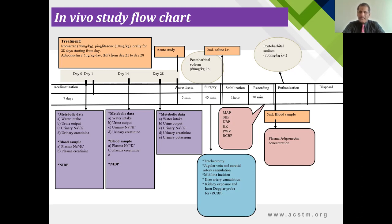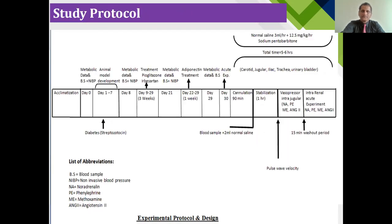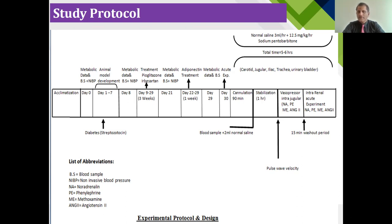We performed the tracheotomy, cannulated the jugular vein, cannulated the carotid artery, and then a midline incision was made in the abdominal region. The iliac artery was also cannulated. The kidney was exposed and placed with a laser Doppler flow probe for measuring renal cortical blood perfusion. The carotid artery, jugular vein, and iliac artery were all cannulated. The animal was euthanized with an extra dose of pentobarbitone at 200 microgram per kg intraperitoneally, and a blood sample was taken for plasma adiponectin concentration.